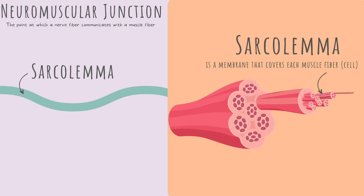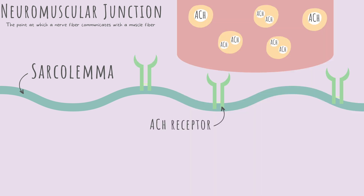Any nerve impulse or action potential must go through the sarcolemma in order to have an effect on the myofibril. We also have the acetylcholine receptors on the sarcolemma. Generally, there are a lot of steps involved in creating a muscle contraction. Since we're studying for the TEAS exam or HESI-A2, I'm going to leave a lot of details out.